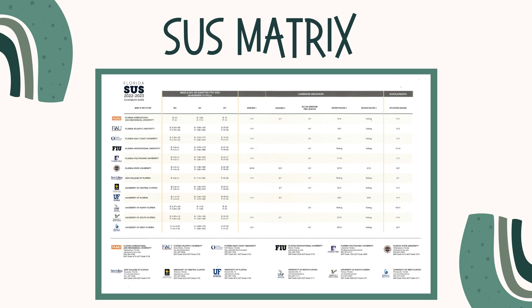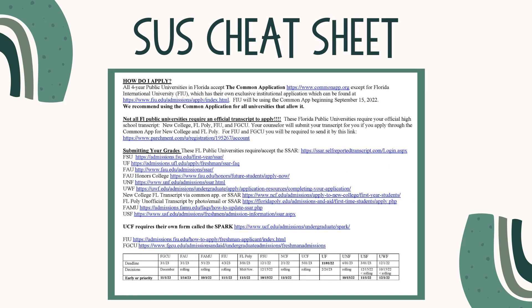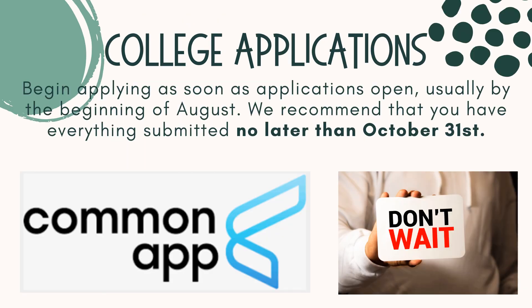This is the 2022-2023 State University System Matrix. It has a lot of really important information about all of the public universities in our state, such as the profile of their current freshman class and general details about the application process. All of the four-year public universities accept the common application. Some of the schools ask applicants to self-report their high school grades, while others will ask for an official transcript. We have this broken down for you in our SUS cheat sheet. We recommend that you begin applying for college as soon as each school begins accepting applications, which is usually the beginning of August. You should plan to have everything submitted no later than October 31st, 2023. Please understand that some private or out-of-state universities may have sooner deadlines for early action or early decision. If you're waiting to take or retake the SAT or ACT, you are risking missing the advantages of applying early, especially to rolling admissions schools.